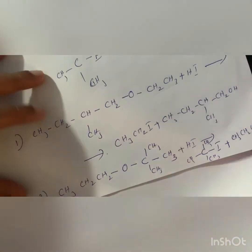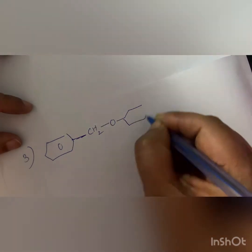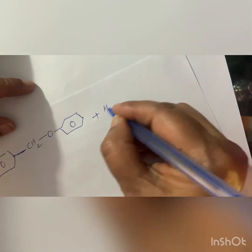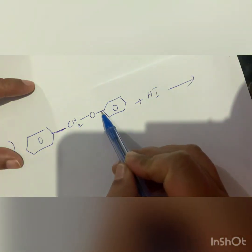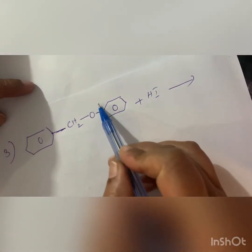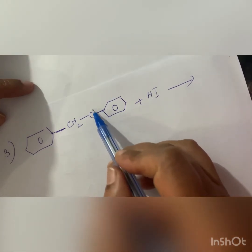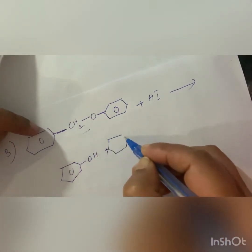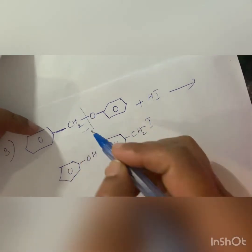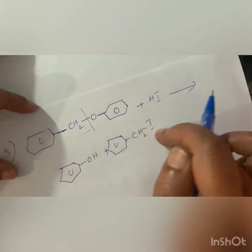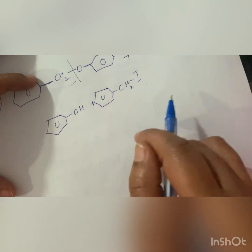Practice question 3: Ph–CH₂–O–Ph (benzyl phenyl ether) plus HI. The bond between benzene ring and oxygen is very strong and cannot be broken. So oxygen takes hydrogen, and iodine adds to the benzyl carbon (CH₂). Products: Ph–CH₂I plus Ph–OH.